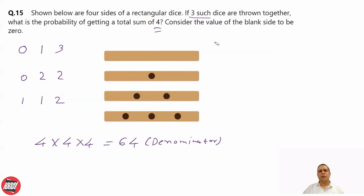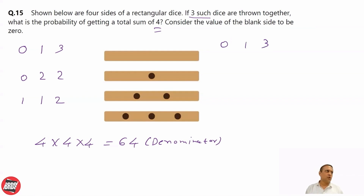Now for the numerator: the combination 0, 1, 3. It may be possible zero is on the first dice, or zero is on the second dice, or zero is on the third dice.